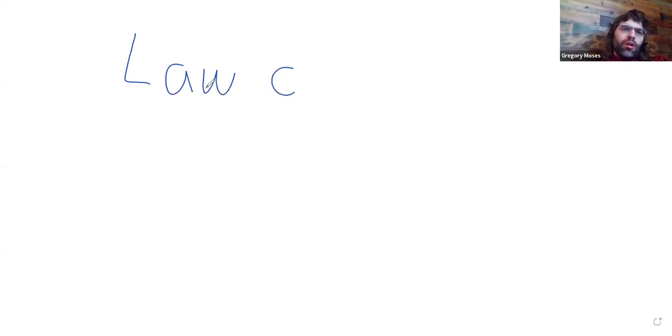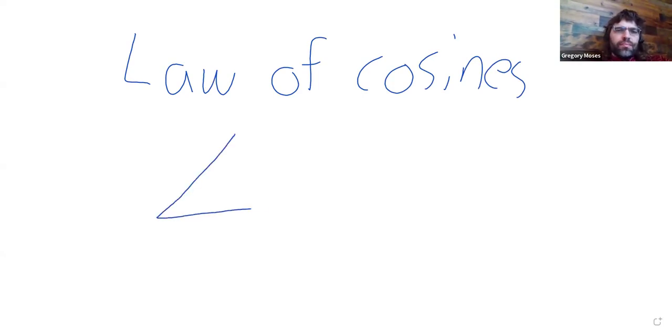The law of cosines is a tool for when you have side angle side. So, if you know that this is 10 and you know that this is 37 degrees, and if you know that this is 15, you could use the law of cosines to find other stuff.